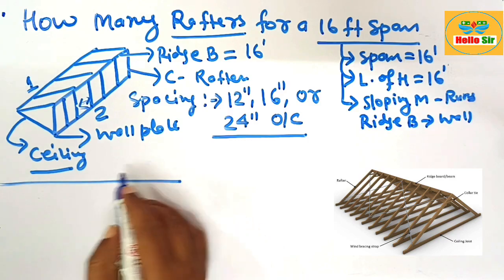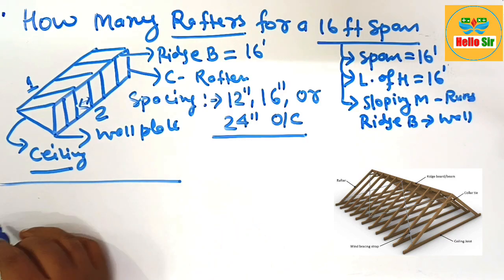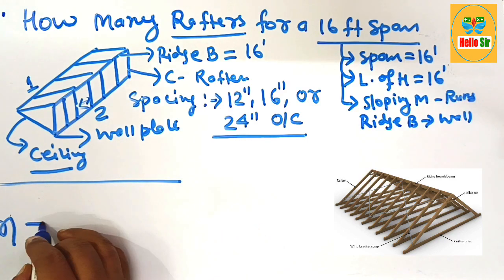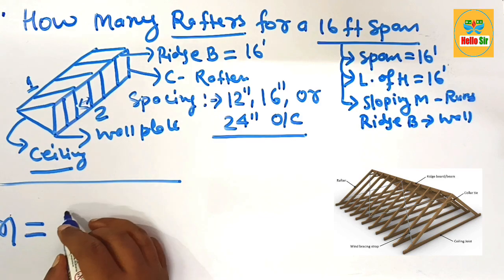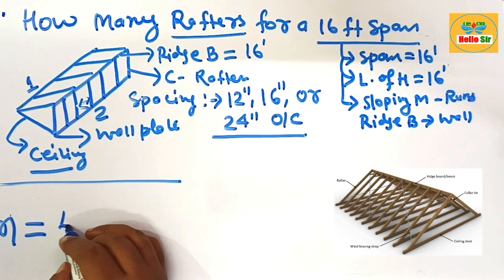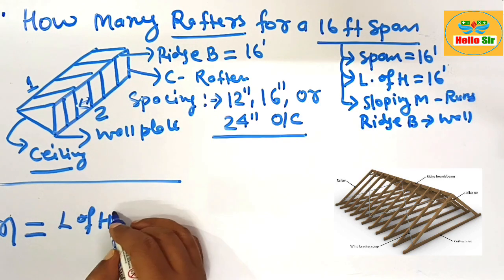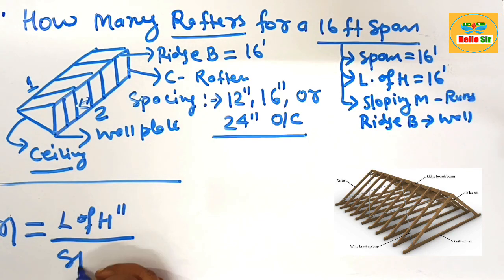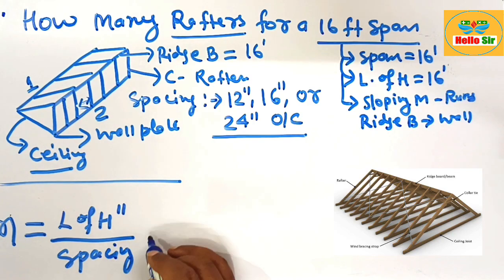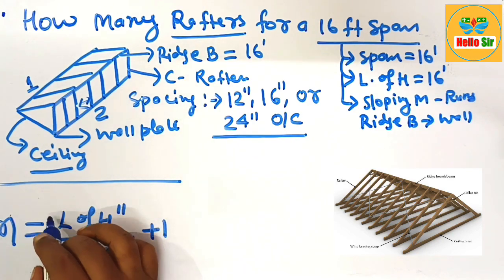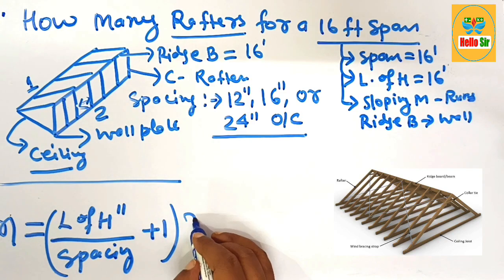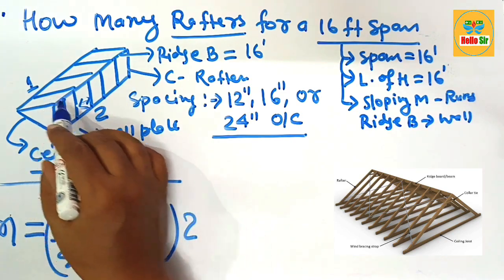What is the formula to calculate the number of rafters? The number of rafters equals the length of the house in inches divided by the spacing between the rafters, plus one, and multiply by two for both sides.